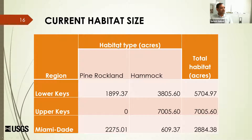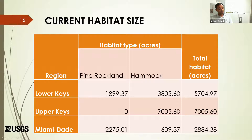The current habitat size, excluding Long Pine Key, is approximately 2,000 acres in the Lower Keys — mainly across four or five islands, with the majority at Big Pine Key — and 2,275 acres in Miami-Dade. Rockland Hammocks are also present in the Lower and Upper Keys. There is evidence that Pine Rockland formerly existed in the Upper Keys — dead stumps and slash pine stems can still be found inside hammocks and mangroves there. Overall, this is the total area left for these snakes. We consider the hammocks as degraded habitat and the Rocklands as ideal or good habitat.